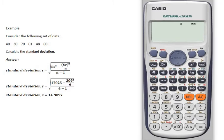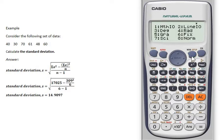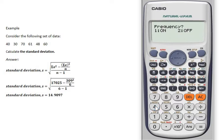To find the standard deviation for ungrouped data, we need to turn off the frequency. Press Shift, then the mode button, and press the arrow down button, choose number 4, then choose number 2 to turn off the frequency.